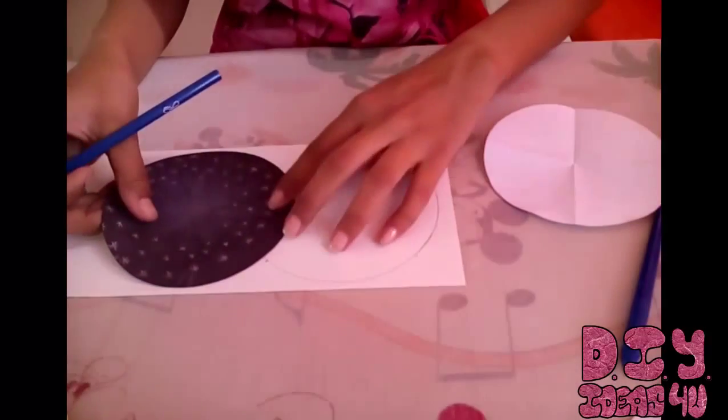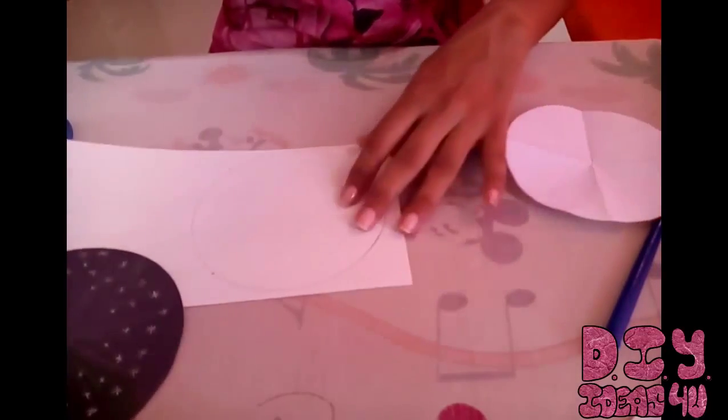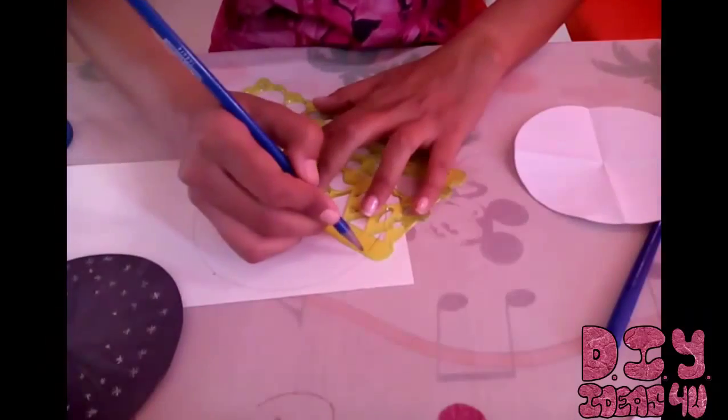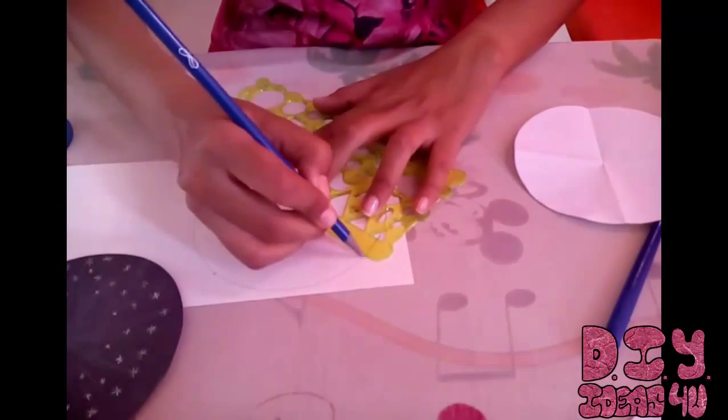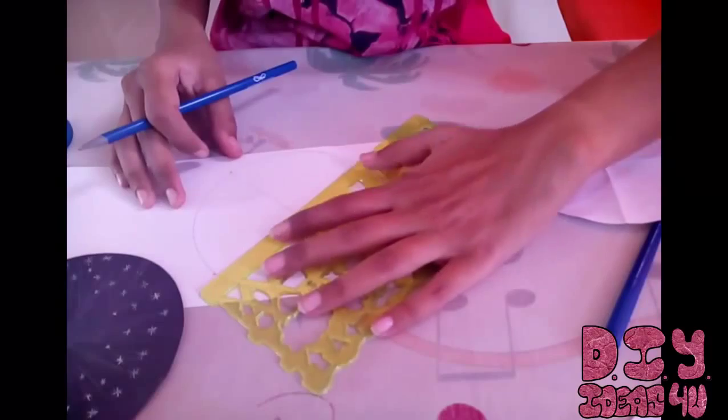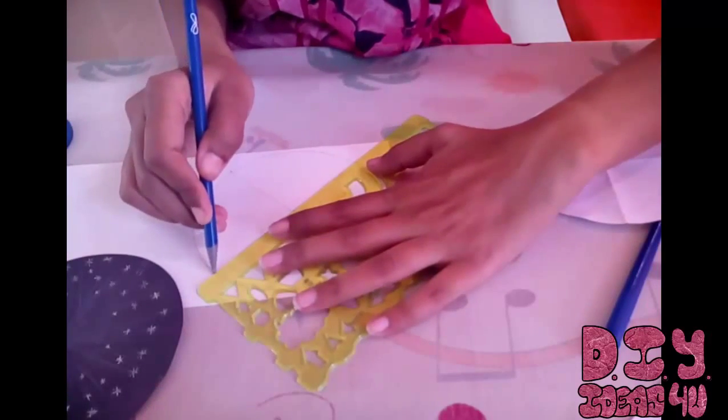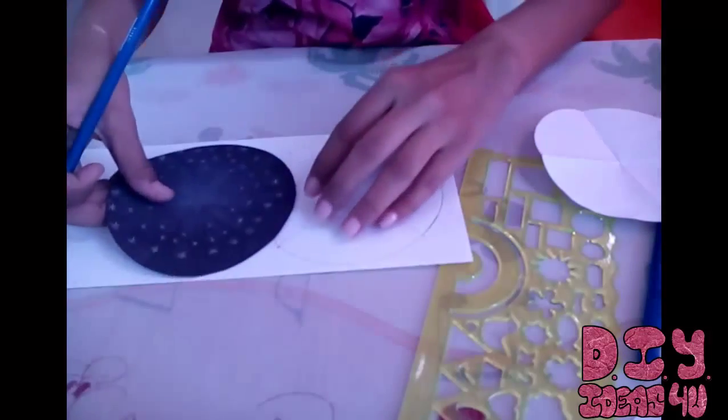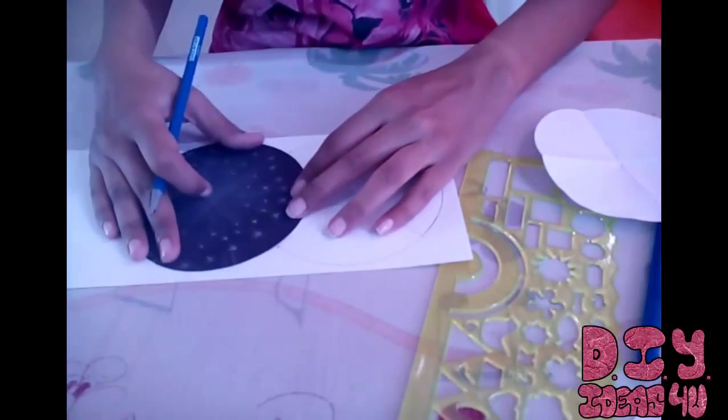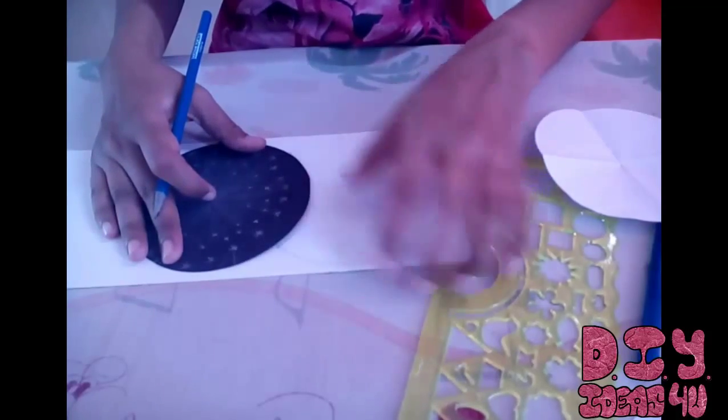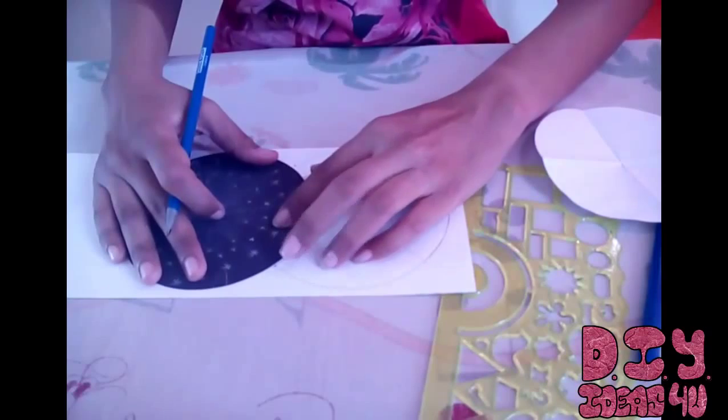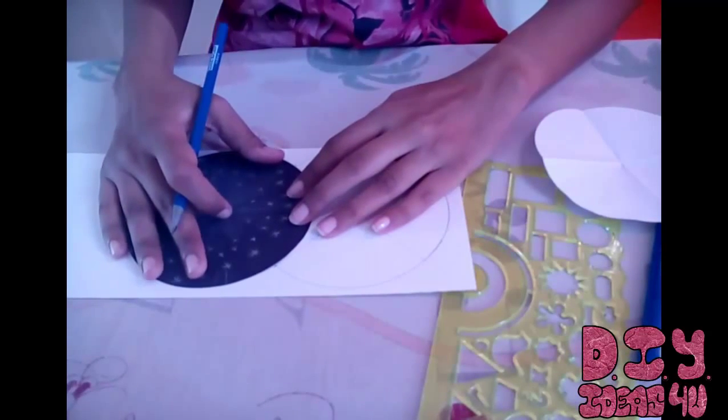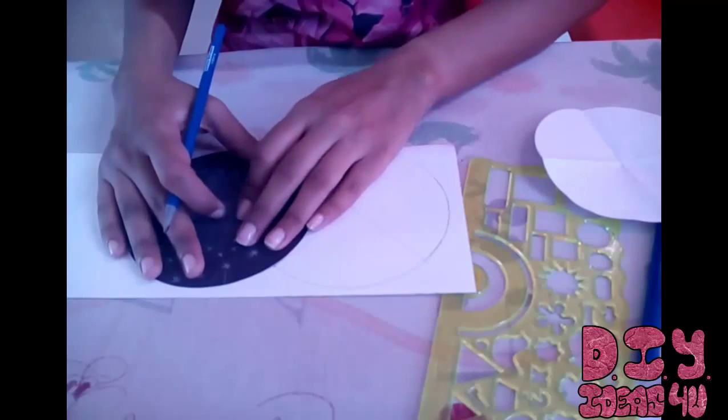Now I'll use a ruler and join these diagonally so that will get the diameters. And I'll place this again like so so that it touches these two points and I'll draw a circle.